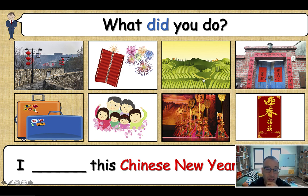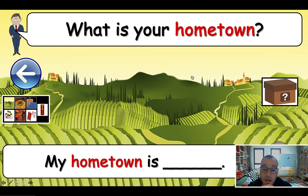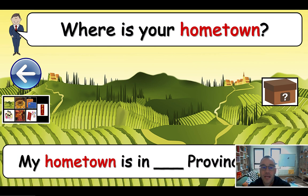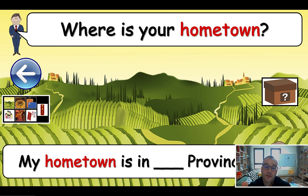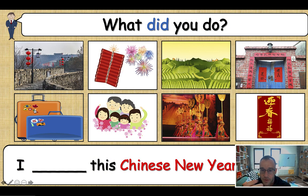They choose one of the eight things we just learned — for example, 'I returned to my hometown this Chinese New Year.' They can be holding their notebook if it's difficult and read it off. You click on that picture and it takes you to the same slide they used before to practice the language. So the class will ask 'What is your hometown?' they say 'My hometown is...' and then 'Where is your hometown?' and they say which province it's in. Just so you know, if you made a mistake or went to the wrong slide, you just click this and it takes you back to the original screen.